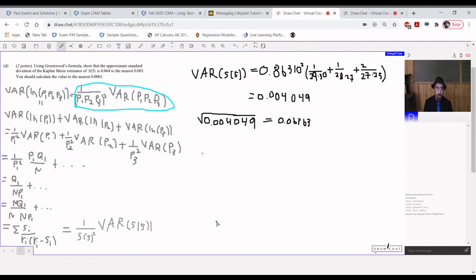Next part, using Greenwood's formula, show that the approximate standard deviation of the Kaplan-Meier estimate of S5 is 0.064 to the nearest 0.001. You should calculate the value to the nearest 0.0001.